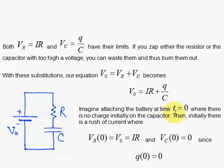Now we imagine at time T equals zero, we flip a switch and close a circuit when there's no charge on the capacitor initially. So that means Q at point T equals zero is zero.